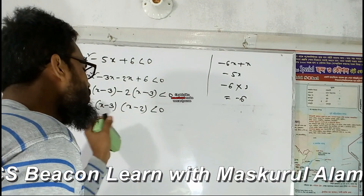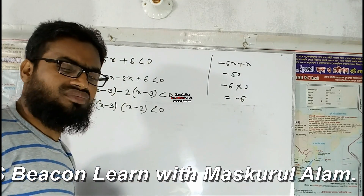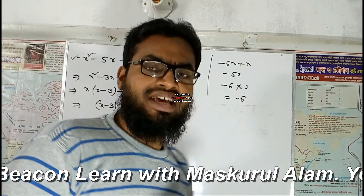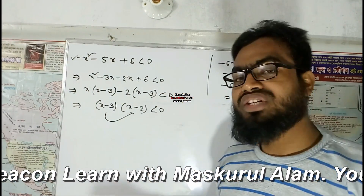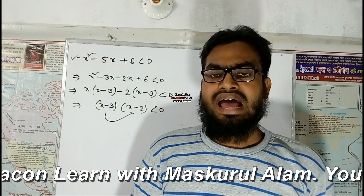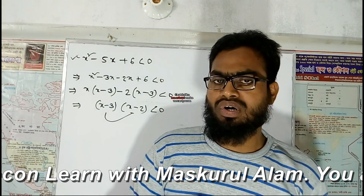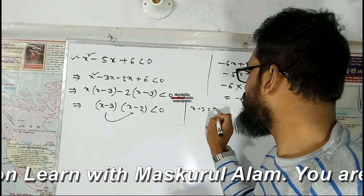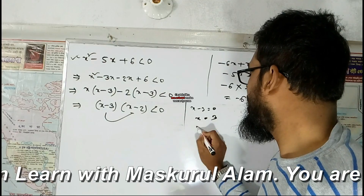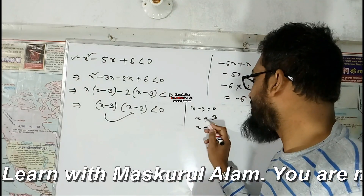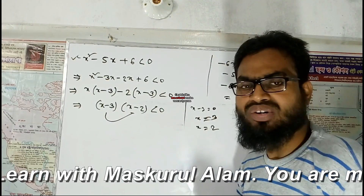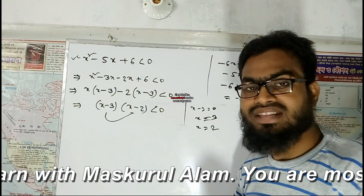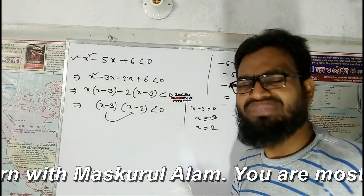What does this refer to? We are getting x minus 3 equals zero, so x equals 3. And if x minus 3 equals zero, the expression is less than zero when x is less than 3.